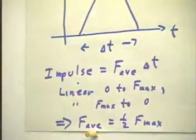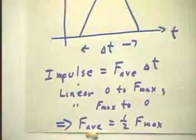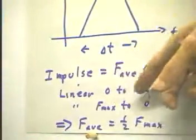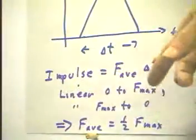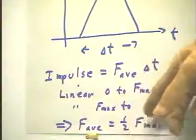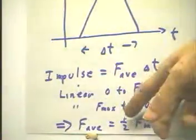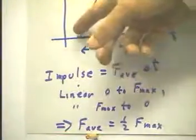So in this case, the impulse is the average force times delta T. Since we're linear from zero to F max and linear from F max down to zero, then the average is one-half F max. And the impulse will simply be half of the maximum force times the width.